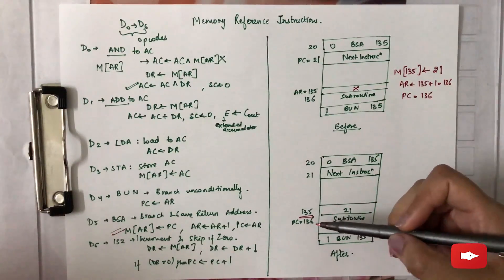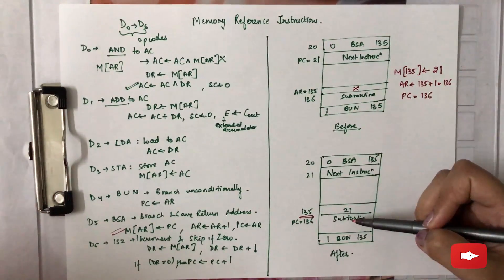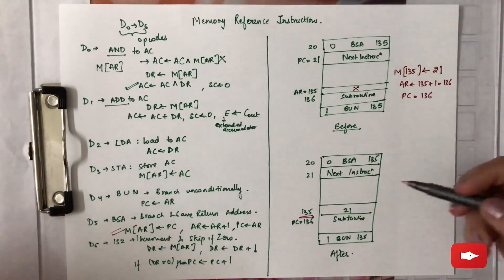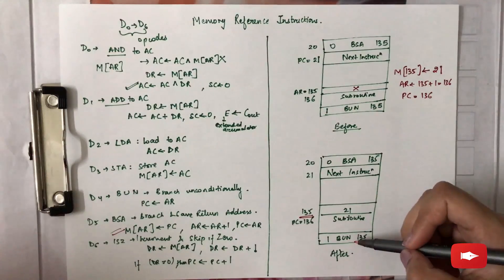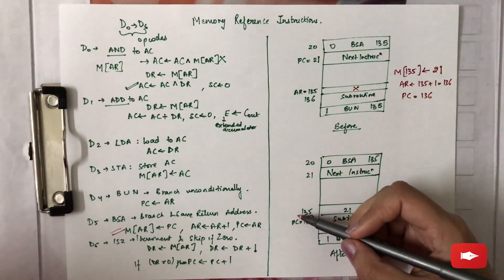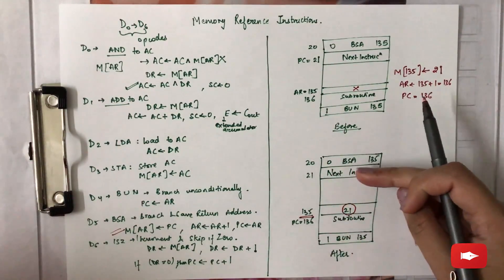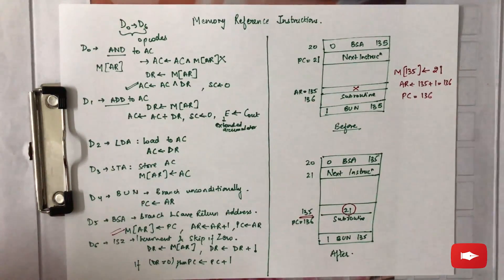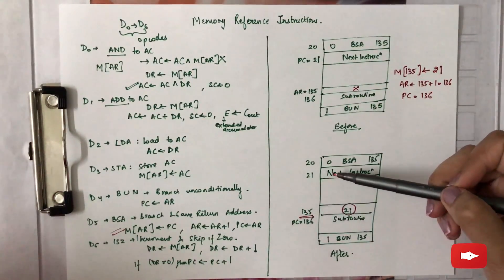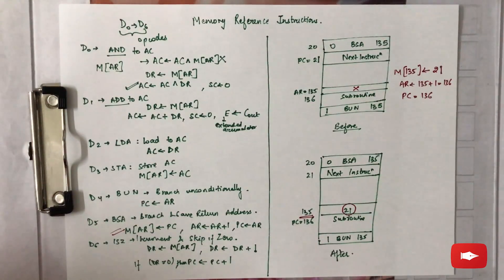Since PC is at 136, the subroutine will be executed starting from that address. The return to the original program is accomplished by a BUN instruction — Branch Unconditionally. You jump to address 135, which contains the value 21, meaning you return to the next instruction in the original program. So you were redirected to the subroutine address 136 and then came back to the original program using the BUN instruction. These are the different memory reference instructions.